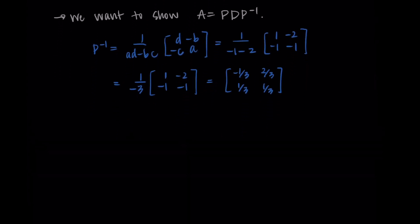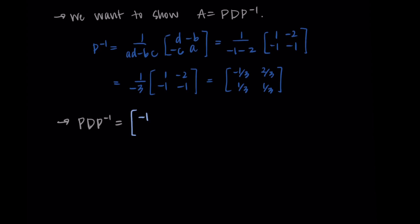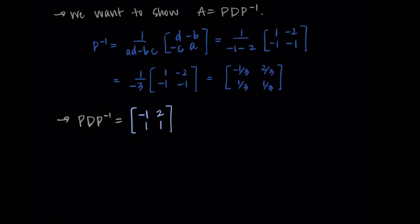We have P, D and P inverse. Let's multiply them together and make sure we're getting A. I'll write P, D and P inverse here. We can do the multiplication in whatever order we want, so we could do P times D first, or we could do D times P inverse first. Remember, you can't swap the locations, so you can't do P times P inverse first. But we can at least pick which two we want to multiply first. I'll do P times D.